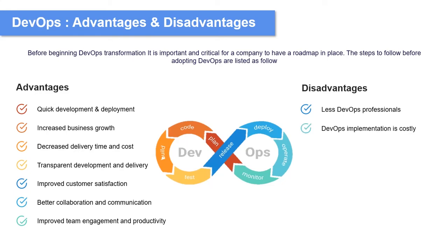Another disadvantage is that DevOps implementation is costly. It requires a solid budget, because implementing DevOps is not free of charge. You need some of the best tools to allow your organization to benefit from all the good practices and advantages of DevOps. This can be a disadvantage especially for small companies that do not have the necessary budget for implementing DevOps in their organization.